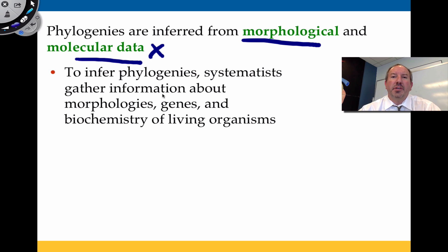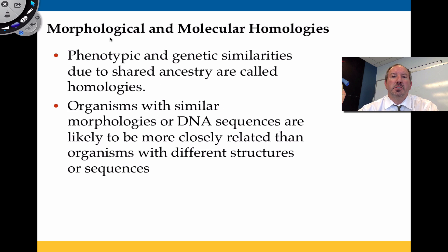Systematics gather information about the morphologies, the various genes, and the DNA sequences and the biochemistry of living organisms. The phylogenetic heritage is based on phenotypes, but more importantly genetic similarities, and I want to emphasize that.